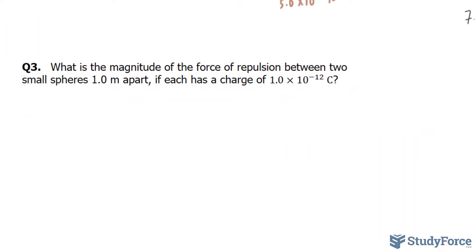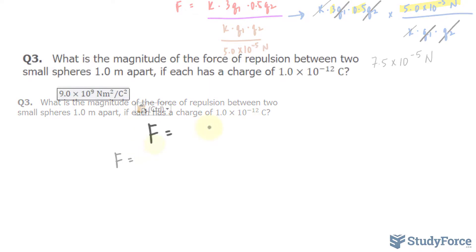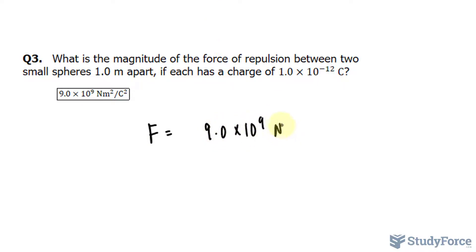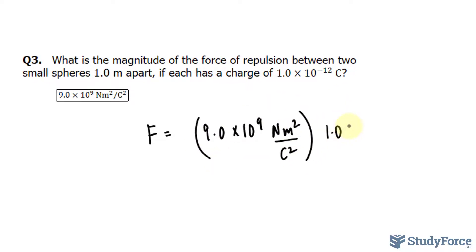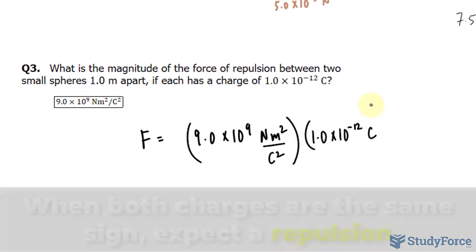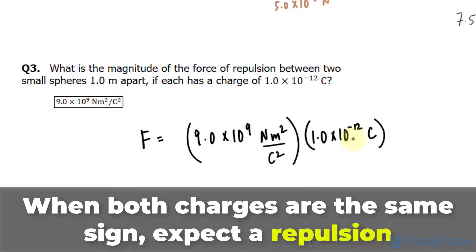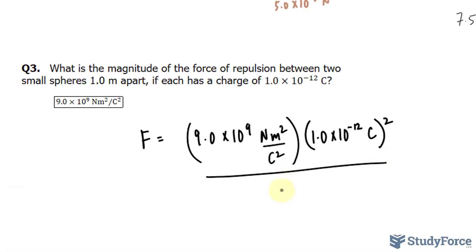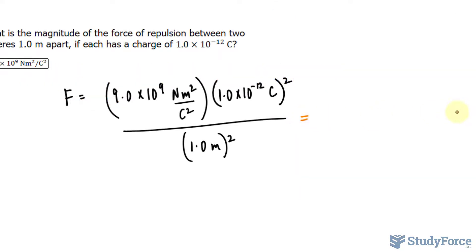In question 3, what is the magnitude of the force of repulsion between two small spheres one meter apart if each has a charge of 1.0 times 10 to the power of negative 12 Coulombs? So, using the same formula as before, and the constant K being 9.0 times 10 to the power of 9 Newton meters squared per Coulombs squared, the charges are 1.0 times 10 to the power of negative 12 Coulombs. Both of them are the same, so I'll just take this value and raise it to the power of 2 divided by the distance between them is 1.0 meters, and that's being raised to the power of 2.